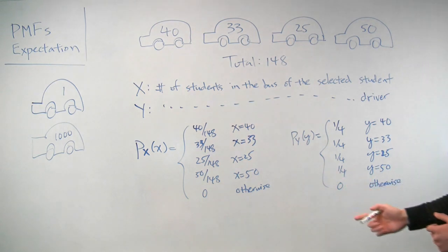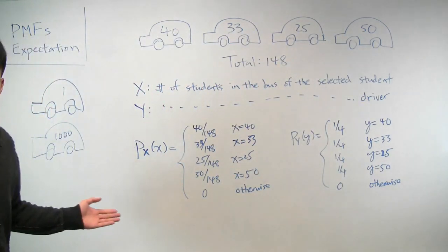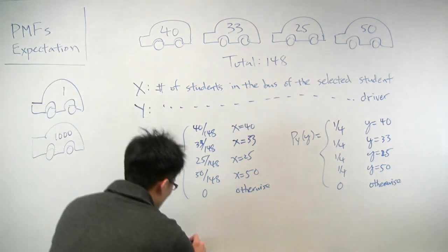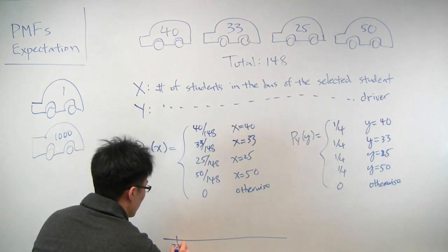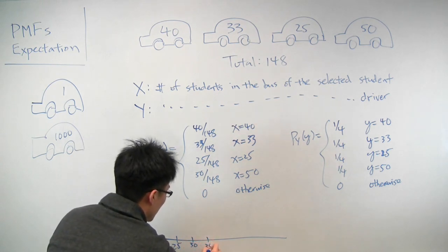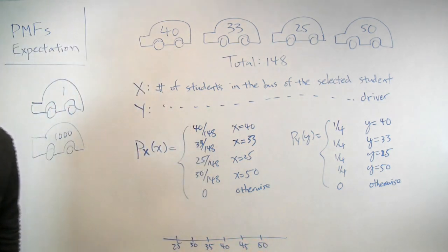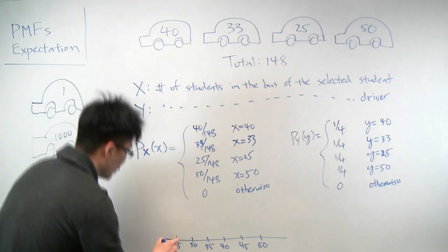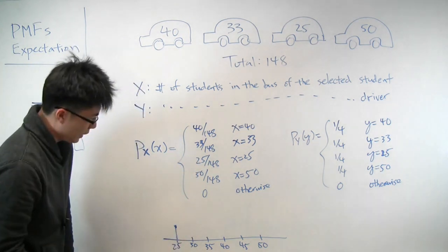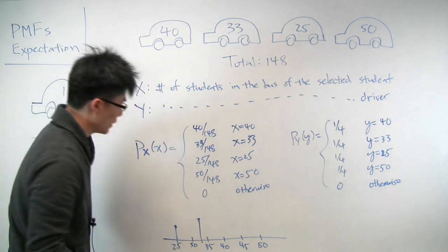So those are the PMFs for our two random variables, x and y. And we can also draw out what the PMFs look like. So if this is 25, 30, 35, 40, 45, and 50, then 25, the probability that it's 25 is 25 over 148. So we can draw a mass right there. For 33, it's a little higher, because it's 33 over 148, instead of 25.